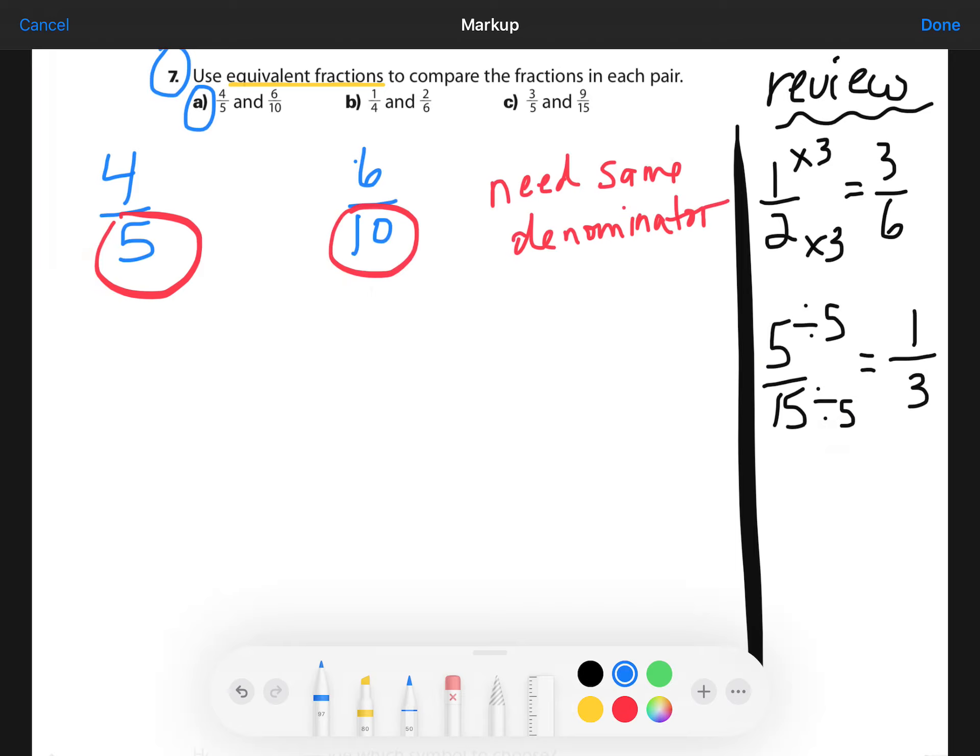I hope that you, first of all, realized that it's tenths. So six-tenths can stay exactly the same as it was. And four-fifths, if I multiply the numerator and denominator by two, then I will get tenths on the bottom and eight on the top. And that was basically because I know that five multiplied by two equals ten.